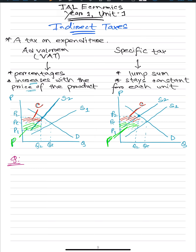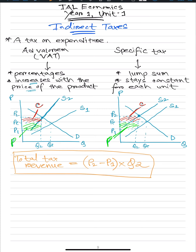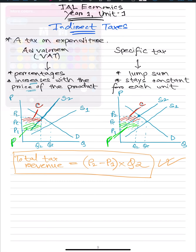In the diagram, both of these diagrams — the tax revenue is the total shaded area. The red area and the green area in total in both graphs are your tax revenue per unit. If you multiply by Q2, those will be my total tax revenue. My total tax revenue will be basically (P2 minus P1) — this rectangle area — times Q2 in both cases.